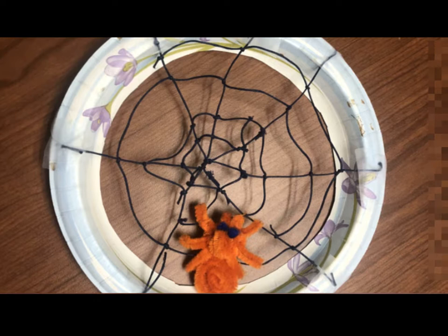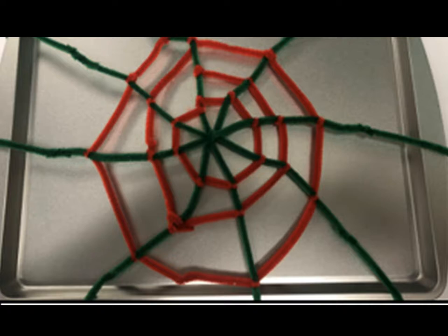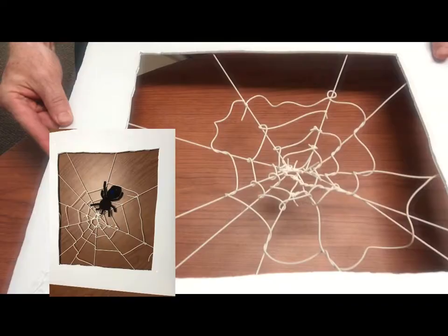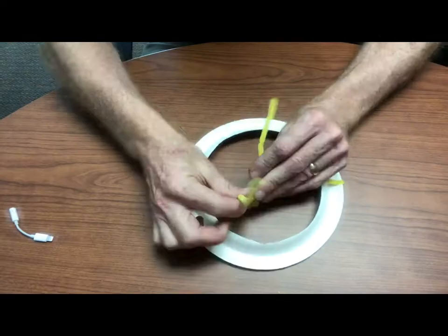So when your students are ready to start constructing their web, you want to make sure that they find something that they can build across a gap—like a hollowed-out paper plate, or a cookie sheet works really well too, or a piece of foam board that's been cut out in the middle.